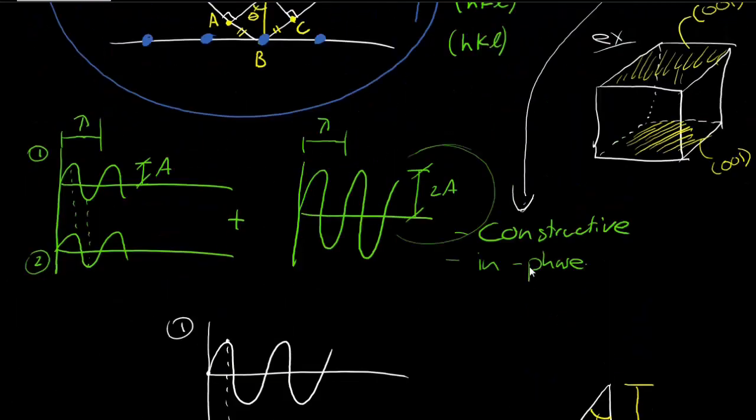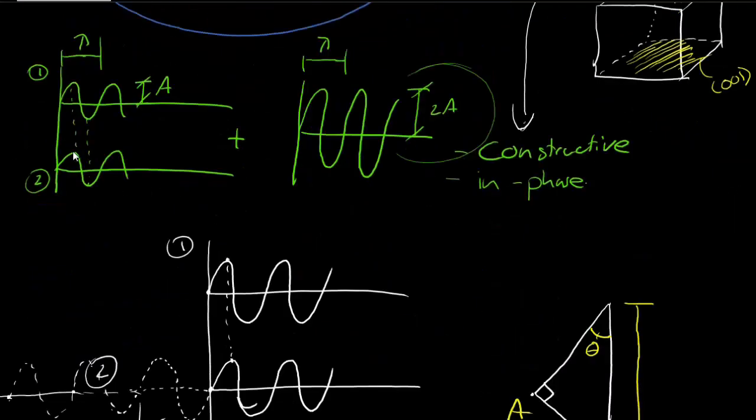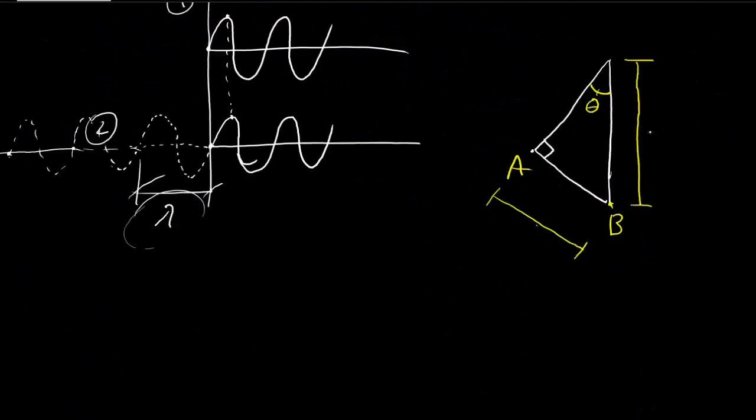But we do know that distance, or we can describe it, because we know it's the distance between planes with the Miller indices H, K, and L. So it's a distance. We're going to call it D. It's D_HKL. Right? The spacing between planes with the Miller indices H, K, and L.